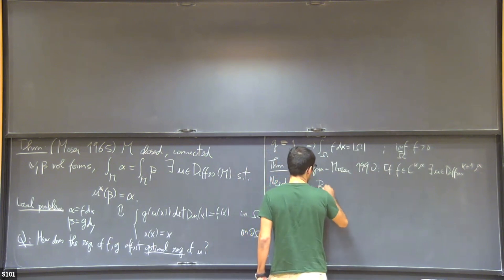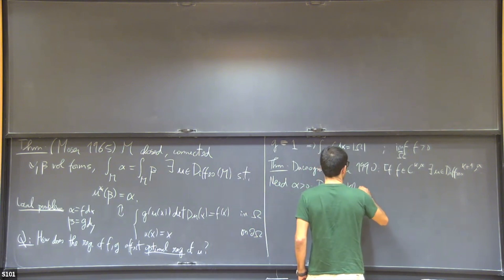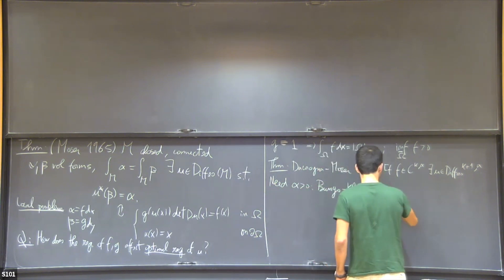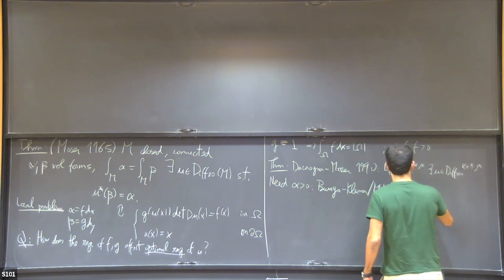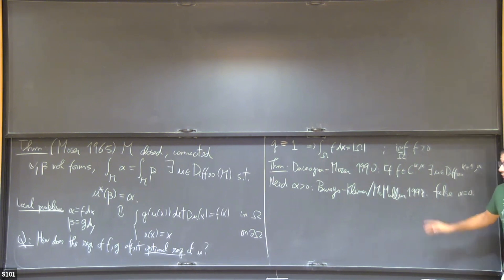There are two beautiful papers by Burago and Kleiner and McMullen, who proved independently in the same year, in the same journal, that this is false for alpha equals zero. In other words, what Burago, Kleiner and McMullen showed is that although Moser teaches us that for smooth volume forms, the only global invariant is the volume, this is not true for continuous forms.